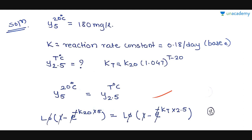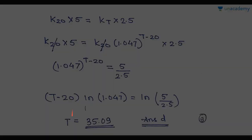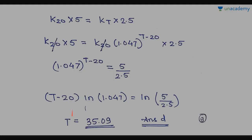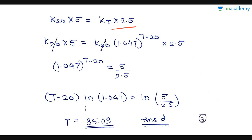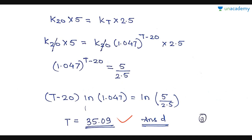After L₀ cancels, the equation simplifies to: K₂₀ × 5 = K_T × 2.5. Substituting the temperature correction formula for K_T and cancelling K₂₀, we solve for temperature T. The result is T = 35.09°C. Therefore, Answer D (35°C) is the correct answer for this question.